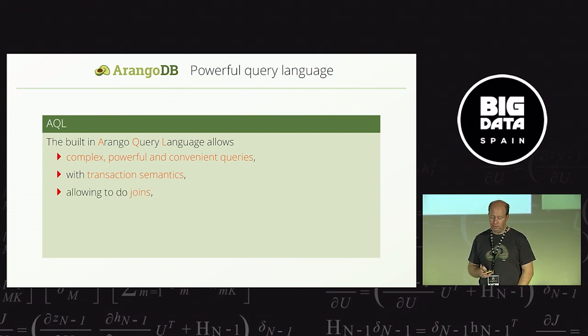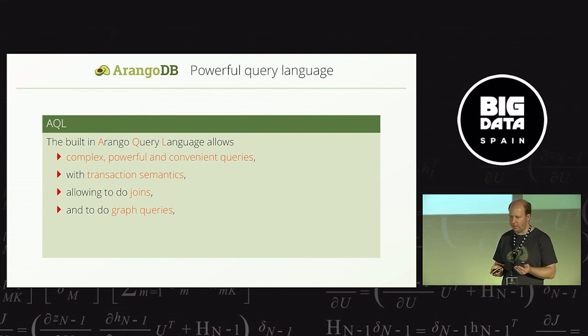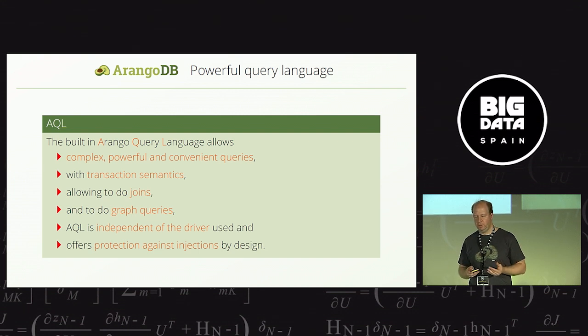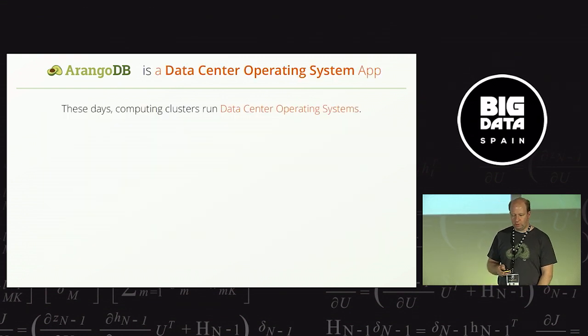There's transactional semantics, at least on a single server. You can do joins. So, many document stores say, well, joins don't scale. We don't offer them at all. Well, okay, yes, sometimes there's difficulty scaling joins, but some are working well, and so, therefore, our language supports joins. Obviously, you can do graph queries. So, what I started with, the graph database aspect is fully there. It is a graph database, just with additional capabilities. And AQL is independent from what language driver you use and has some support for protection against the infamous SQL injections. I should point out, it is not SQL, because we figured that SQL is good for tables, good for relations, but would have to be extended beyond recognition to actually support graphs and graph traversals and these special queries well.